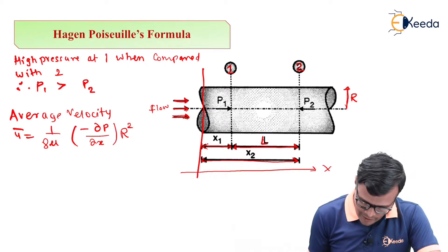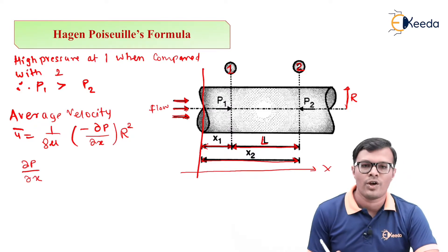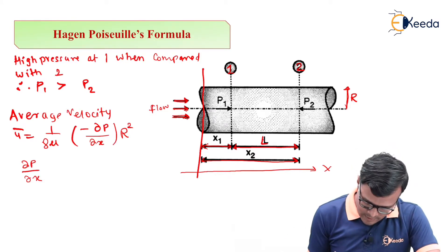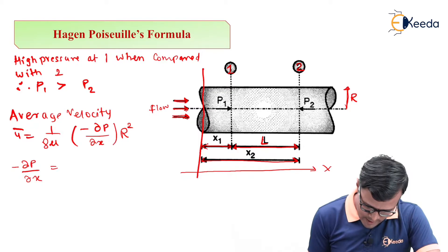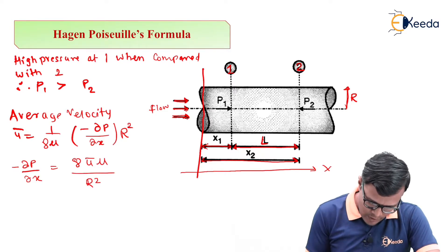We have the basic equation as dP/dx, that is change in pressure with respect to length, that is equal to minus dP/dx. This whole bracket equal to all these terms will go on the other side and will become 8 u bar mu upon R square.